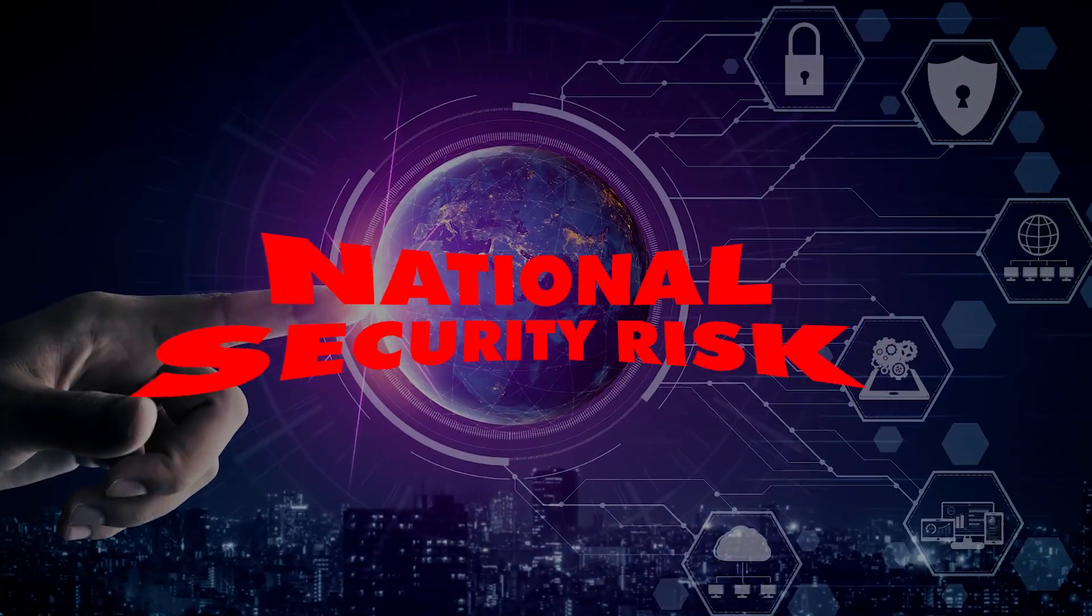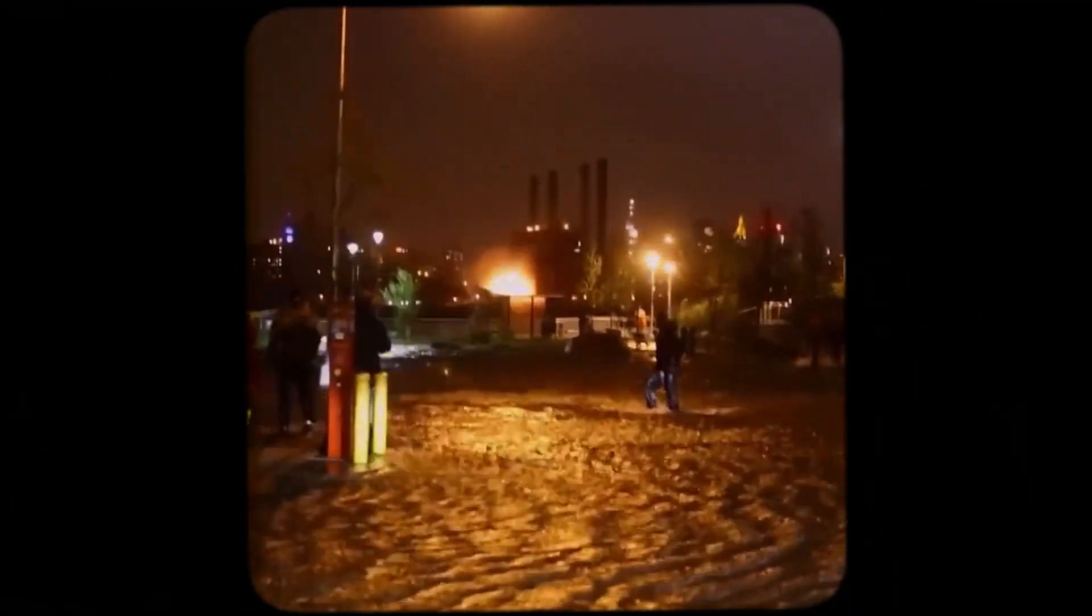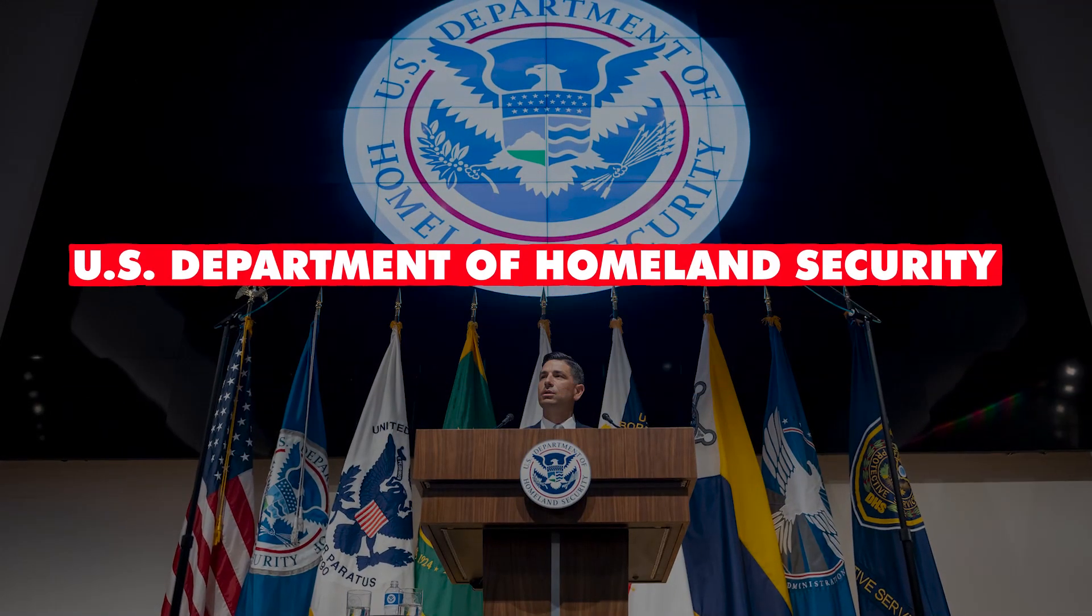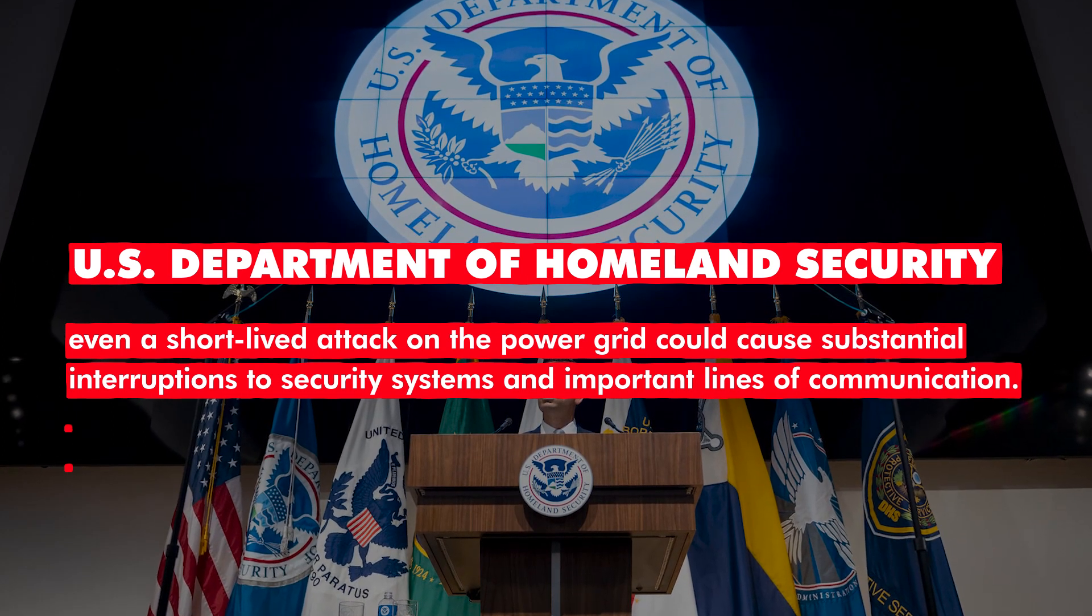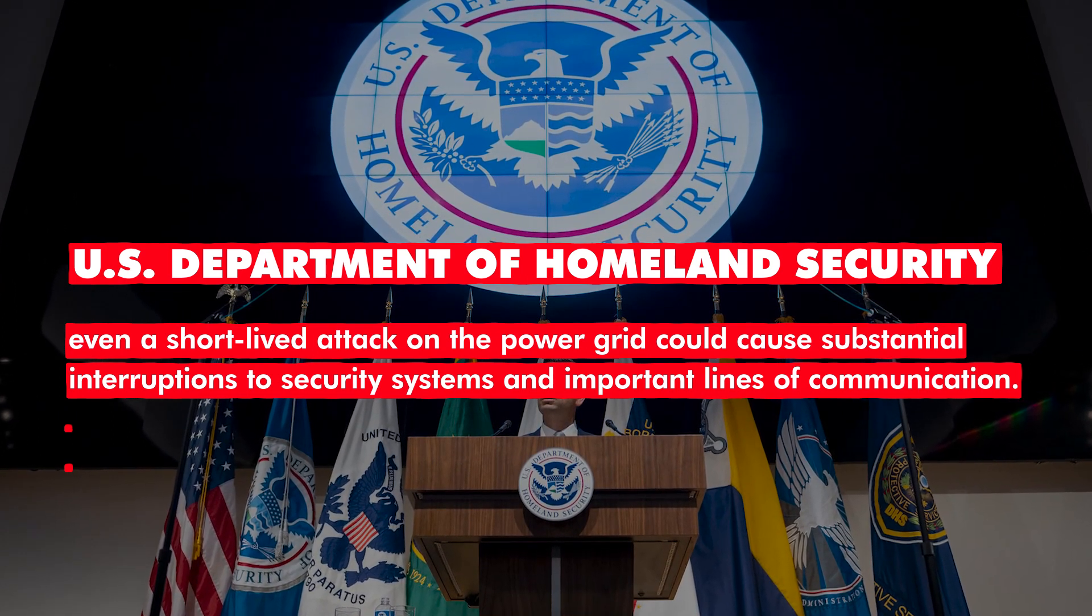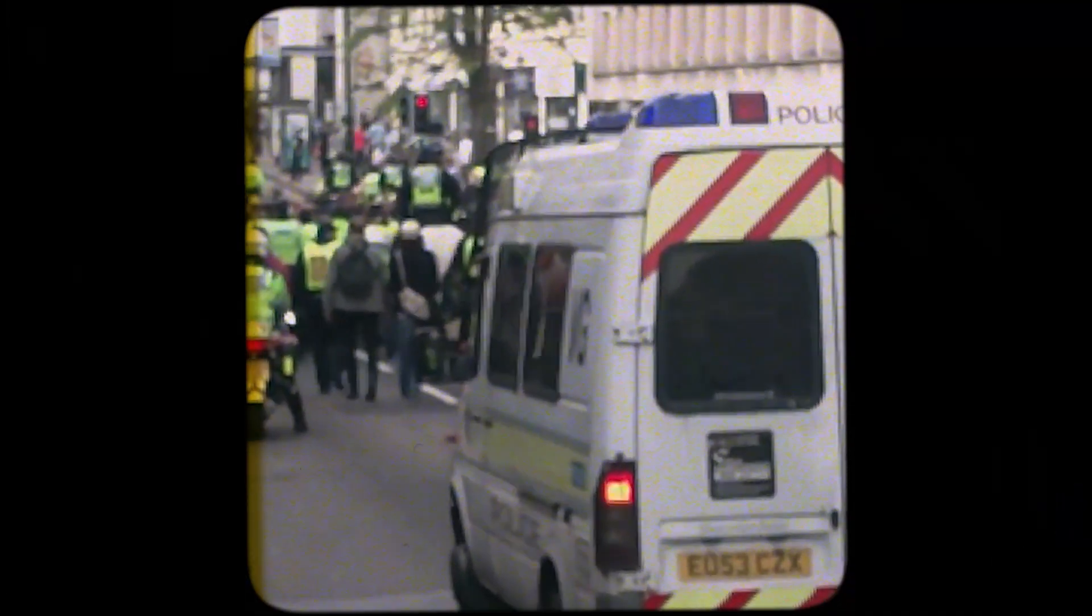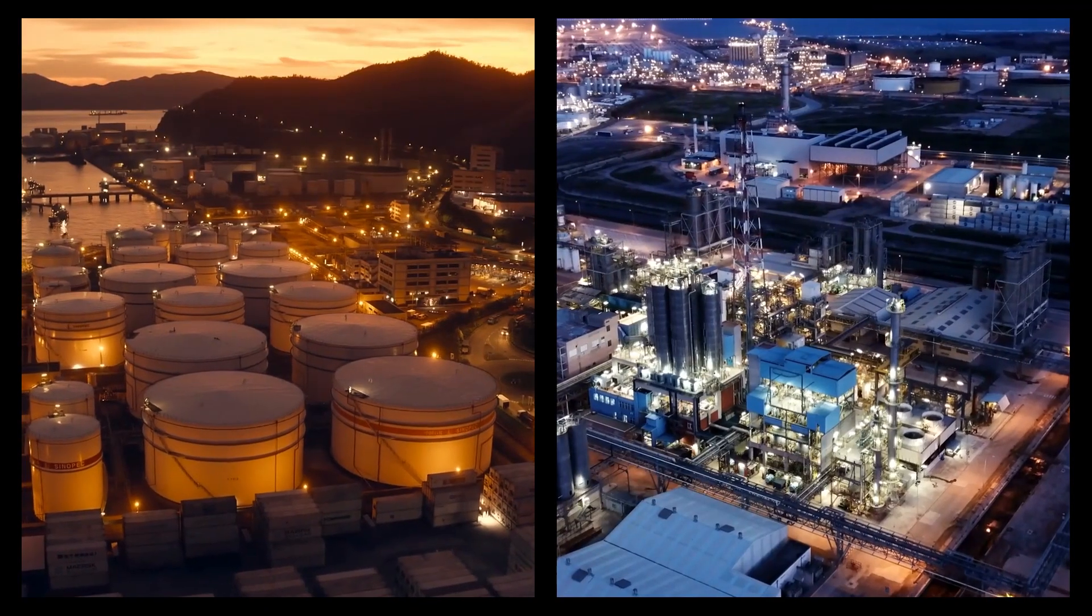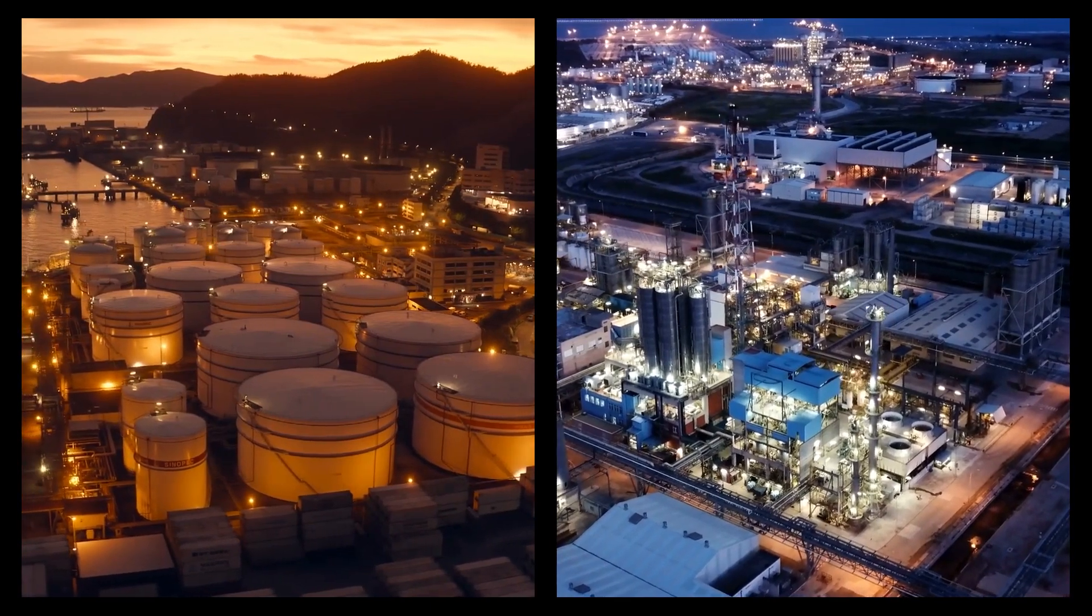In addition to economic losses, a failed power grid would put America's national security at risk. According to the U.S. Department of Homeland Security, even a short-lived attack on the power grid could cause substantial interruptions to security systems and important lines of communication. The chaos that most likely would erupt in our country weakens it from a national security standpoint as well. Refineries and chemical plants are a few sites that have the greatest potential to cause damage if the power grid goes down.